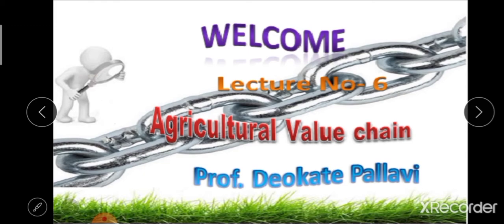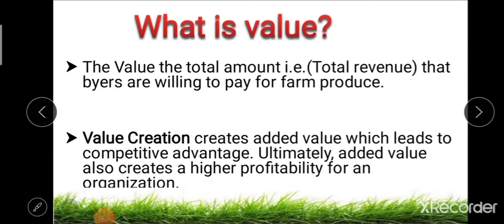We will see one by one the different points in value chain analysis. Before starting actual value chain analysis, we need to understand what is meant by value. As in Econ 1 to 1, that is Principles of Agricultural Economics, we already saw this value concept. Value means it is the total amount that buyers are willing to pay for the farm produce. Or alternatively, the value of a commodity is the purchasing power of that particular commodity in exchange for other commodities.